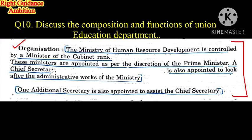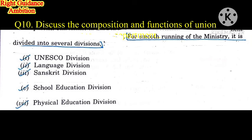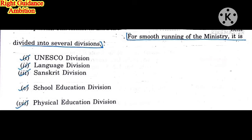A Chief Secretary is appointed to look after the administrative work of the ministry. An Additional Secretary is also appointed to assist the Chief Secretary. For the smooth running of the ministry, it is divided into several divisions. You only need to learn 5 to 6 divisions.